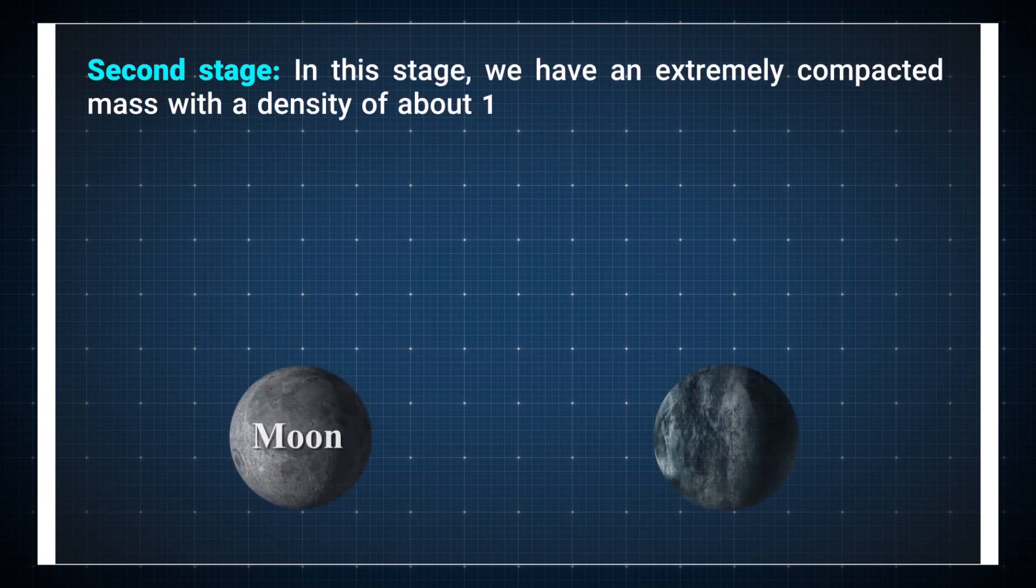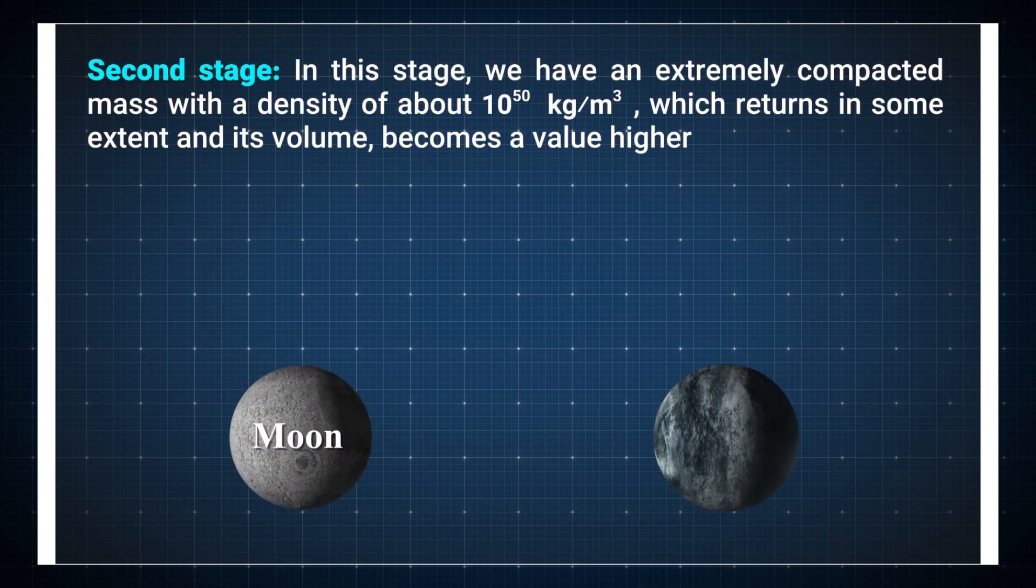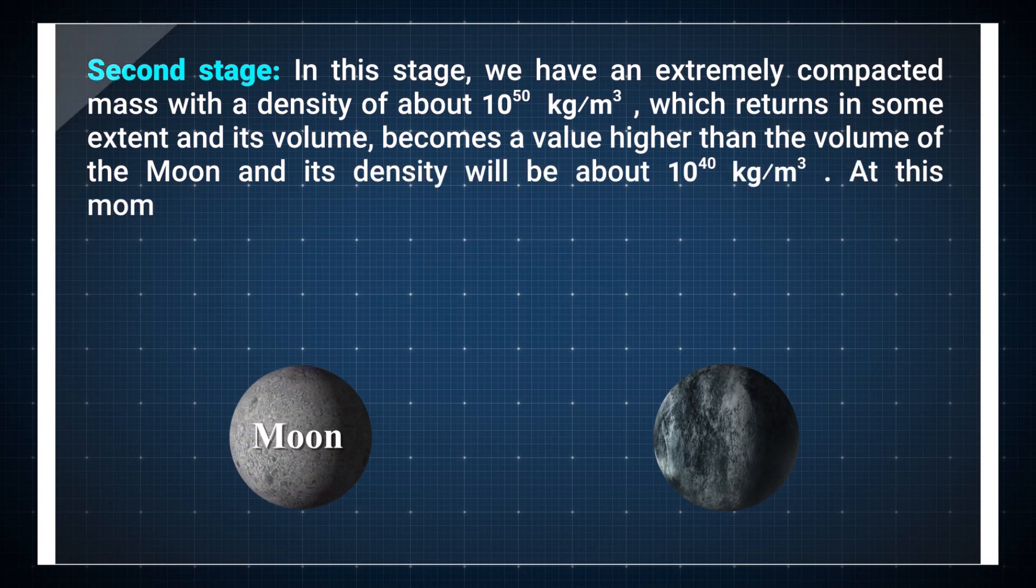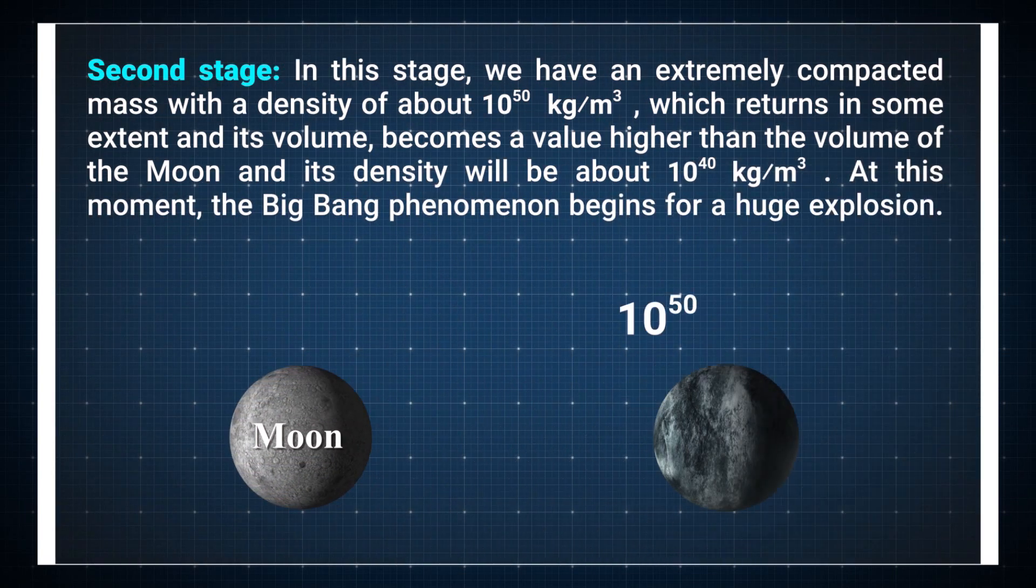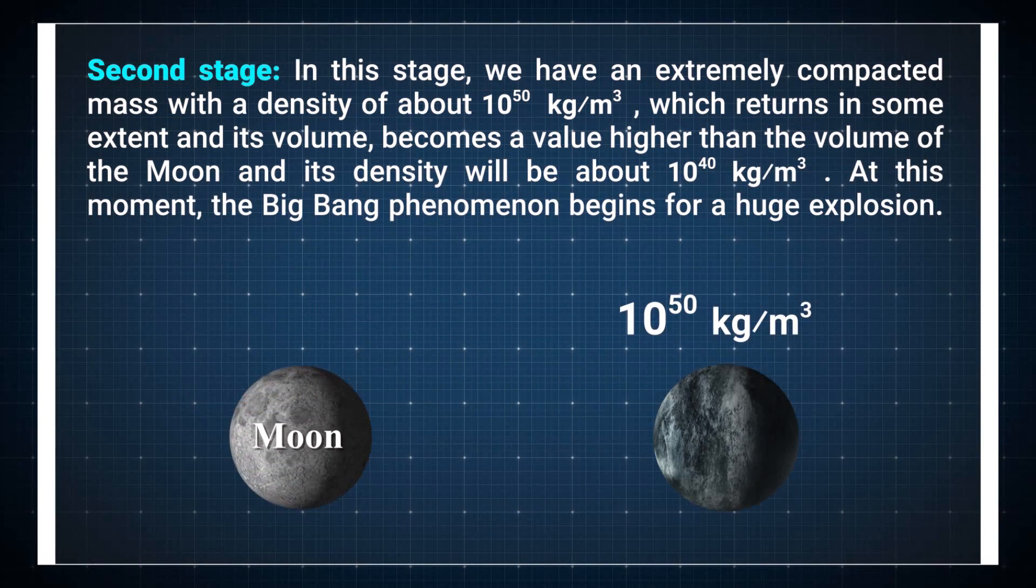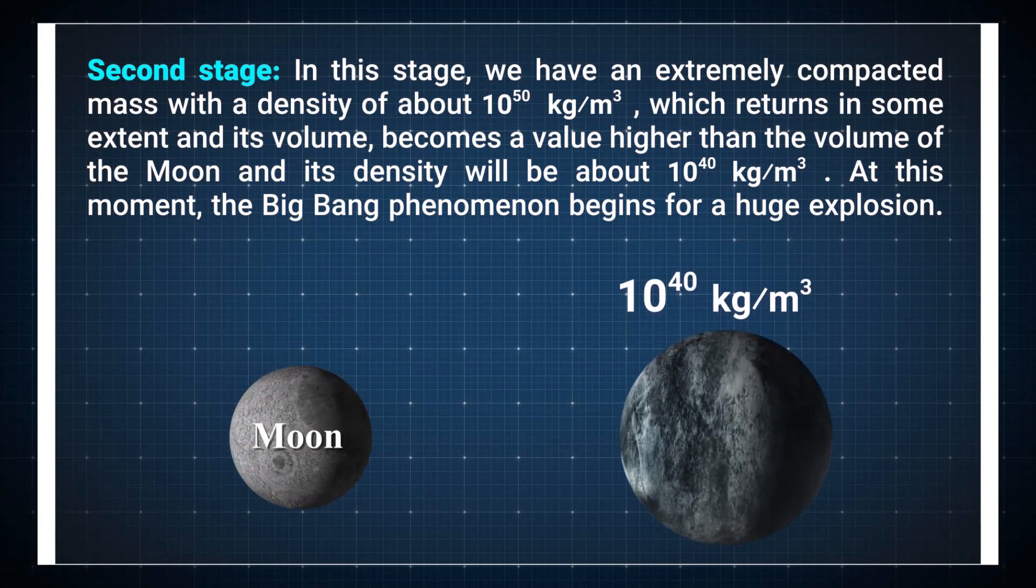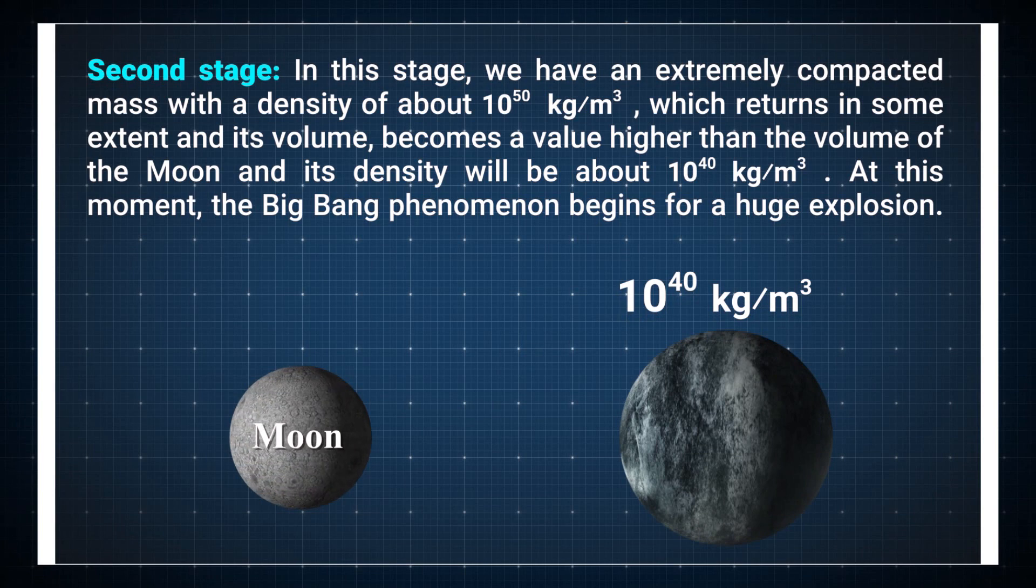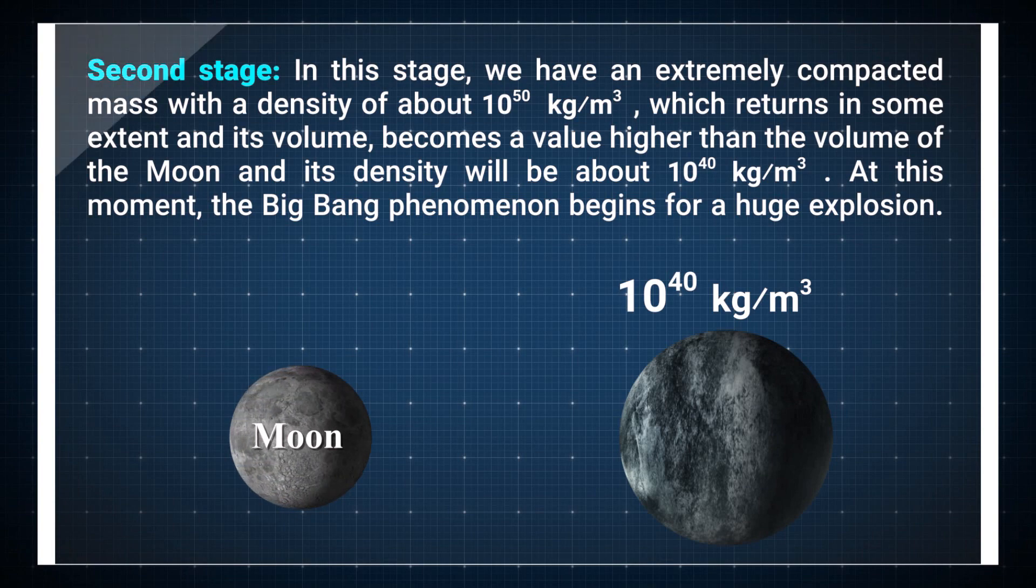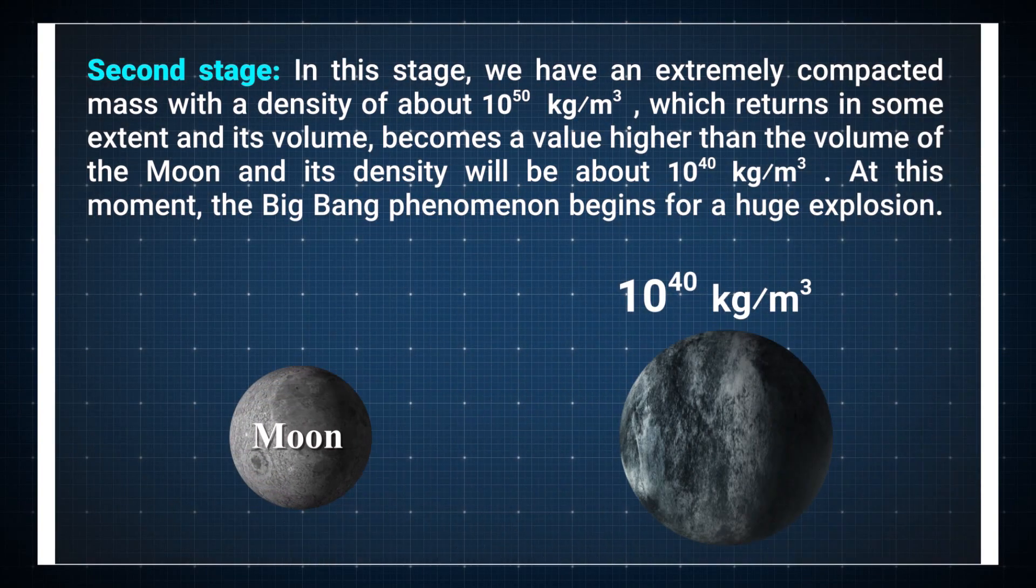Second stage: In this stage we have an extremely compacted mass with a density of about 10^50 kg/m³, which expands to some extent and its volume becomes a value higher than the volume of the moon, and its density will be about 10^40 kg/m³. At this moment, the Big Bang phenomenon begins for a huge explosion.